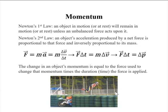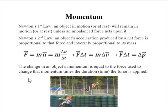We have F·ΔT equals M·ΔV. MV is momentum, so M·ΔV becomes a change in momentum — meaning a force applied for a certain amount of time will change the momentum. A change in an object's momentum is equal to the force used to change that momentum times the duration of the force applied.